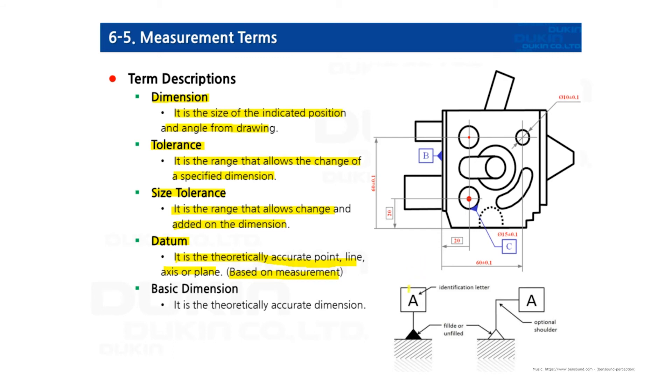You can see here, the datum symbol letters here. Usually, use A to Z, all kinds of alphabets. But, exceptionally, I and O and Q are not applicable as the datum symbol letter, because they may be confused with numbers.